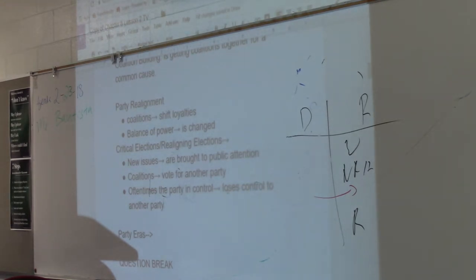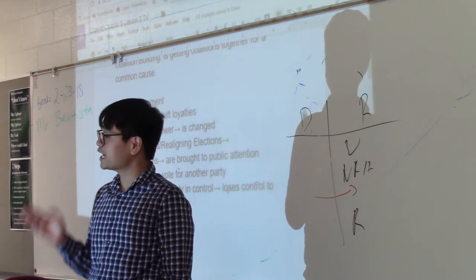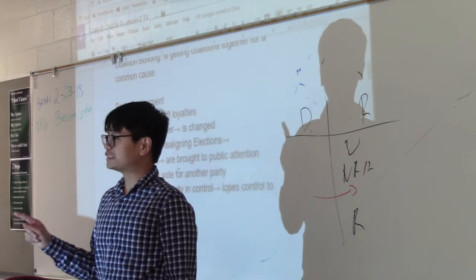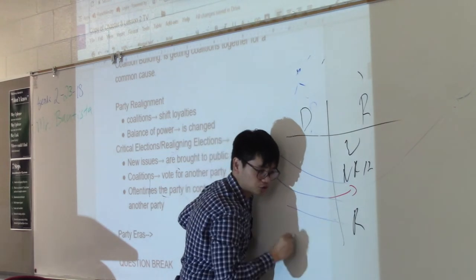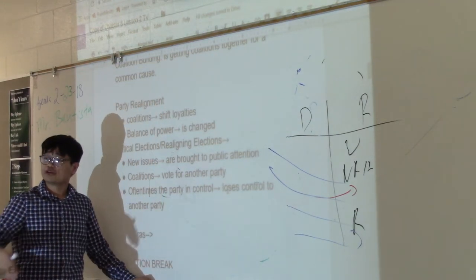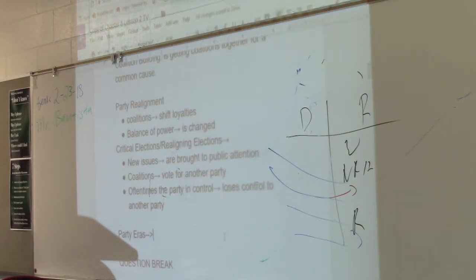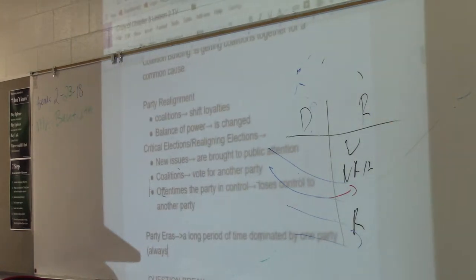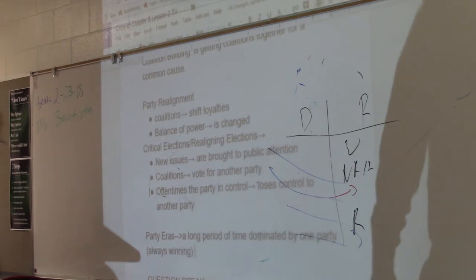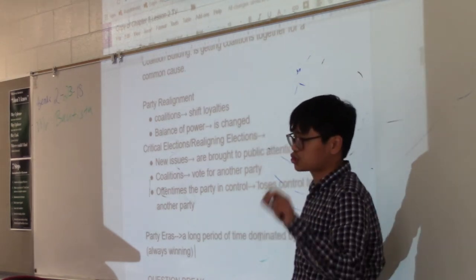In very rare occasions, when enough coalitions move to one side, that party becomes almost invincible for a period of time. If they maintain control for a very long time — maybe 10 or 20 years — we call that a party era. A party era is a long period of time dominated by one party, always winning elections. In modern American history, this doesn't happen very often anymore, but 100 years ago one party would dominate the United States, winning election after election and controlling the government for a very long period of time.